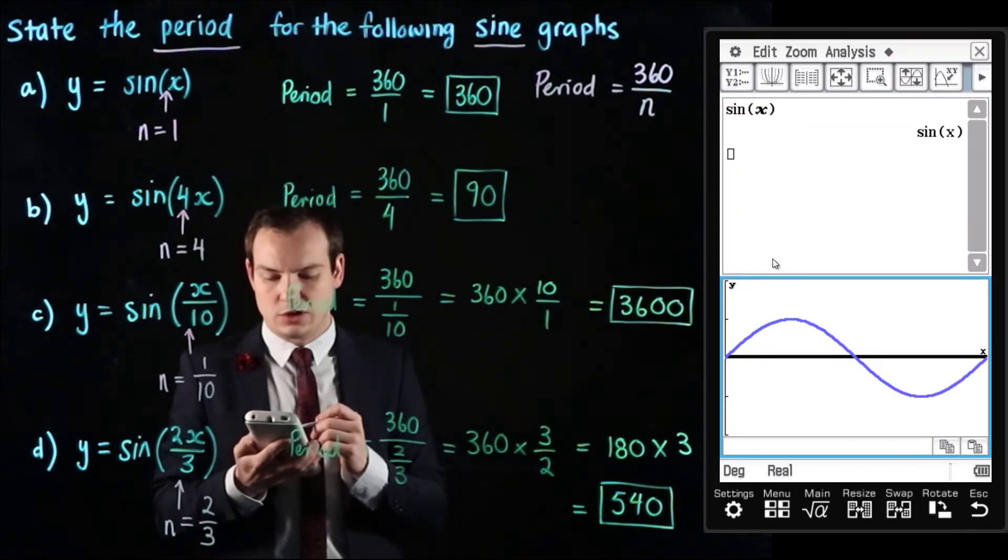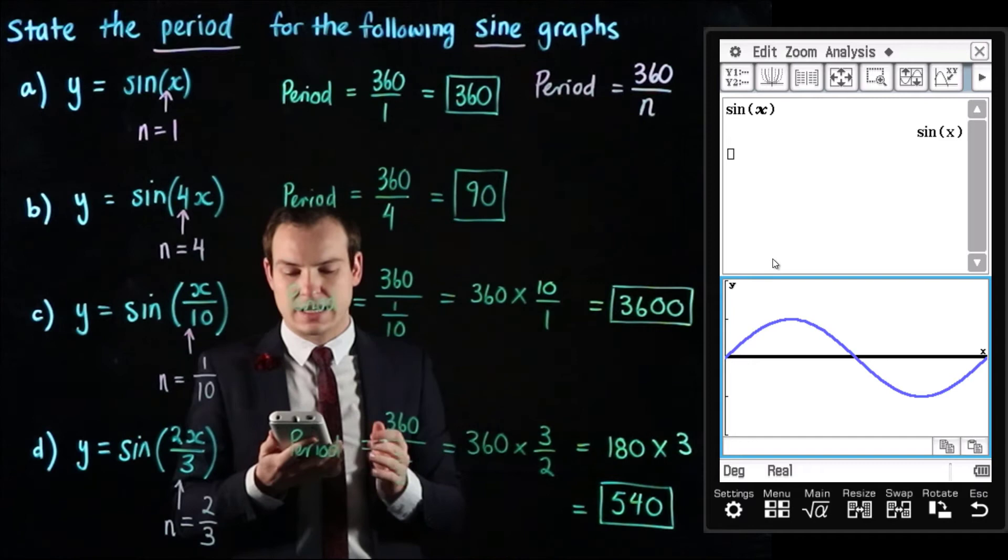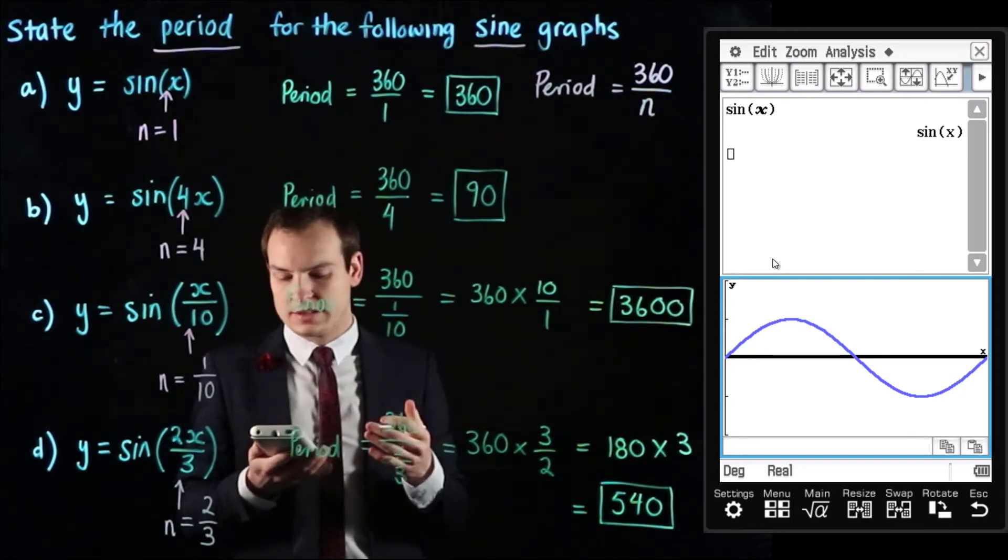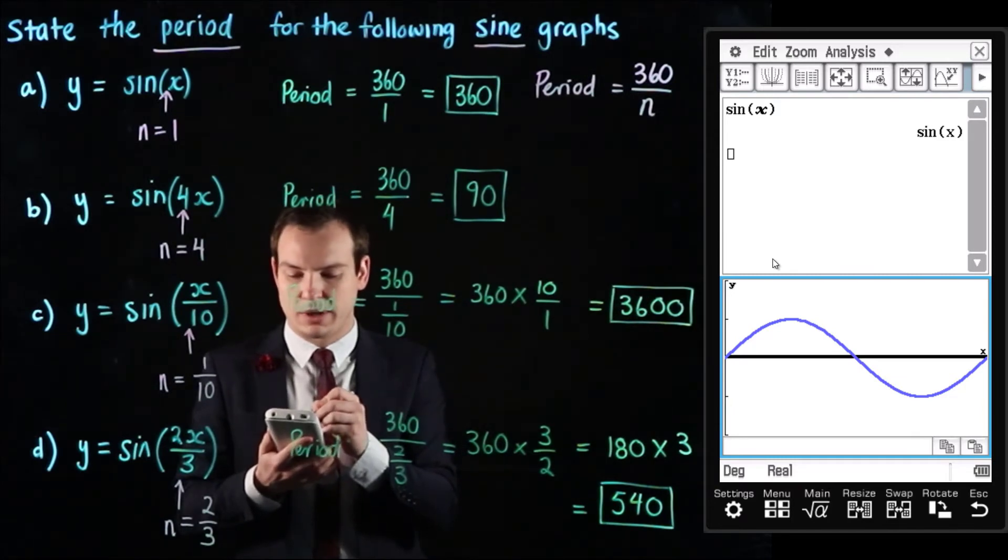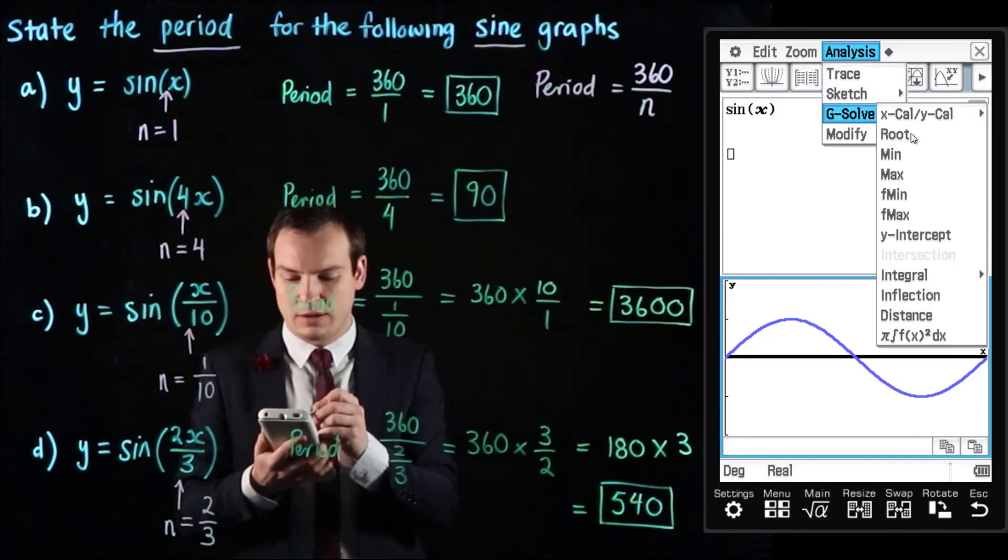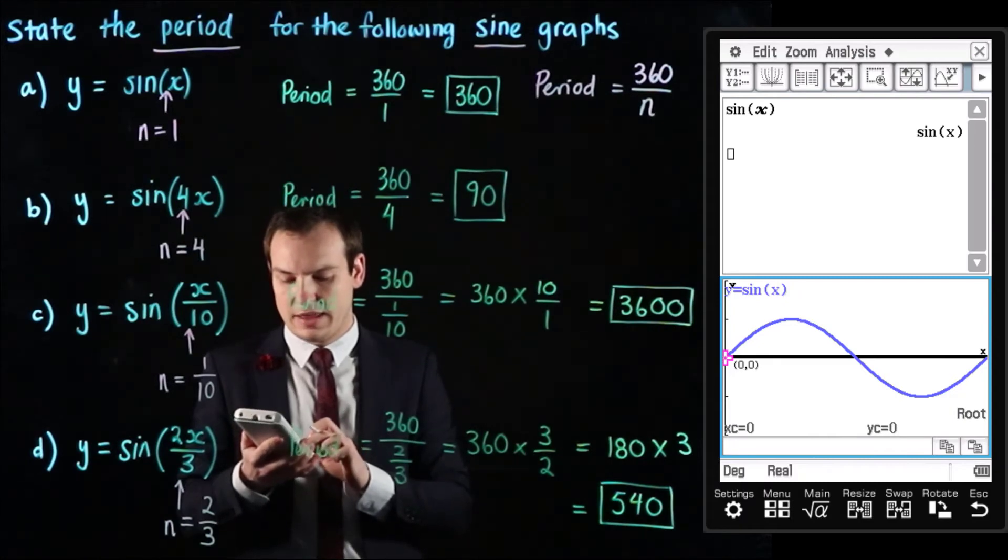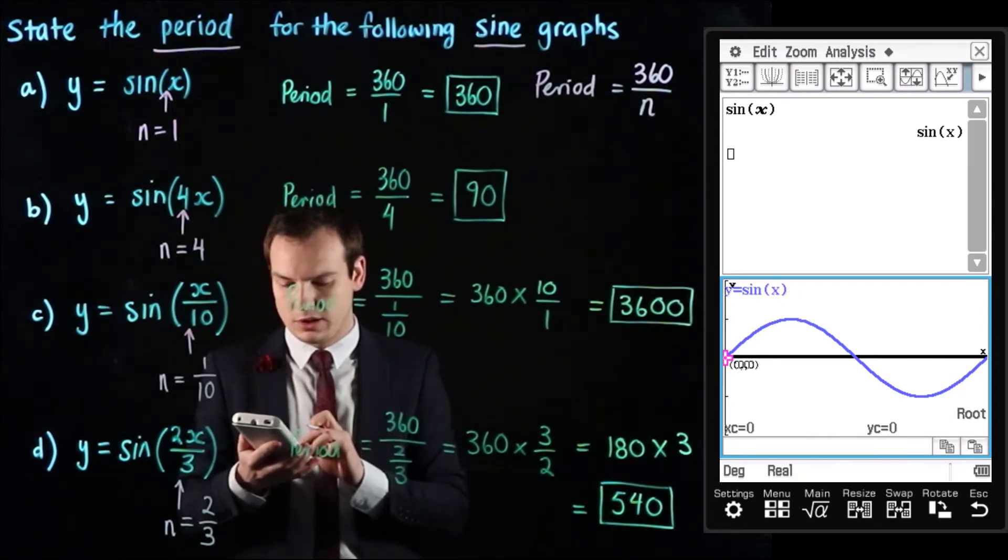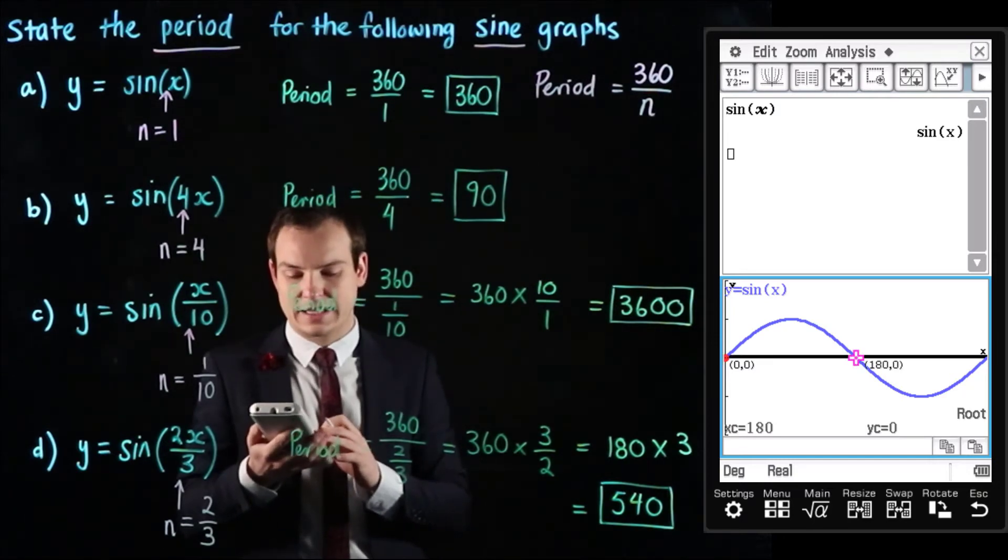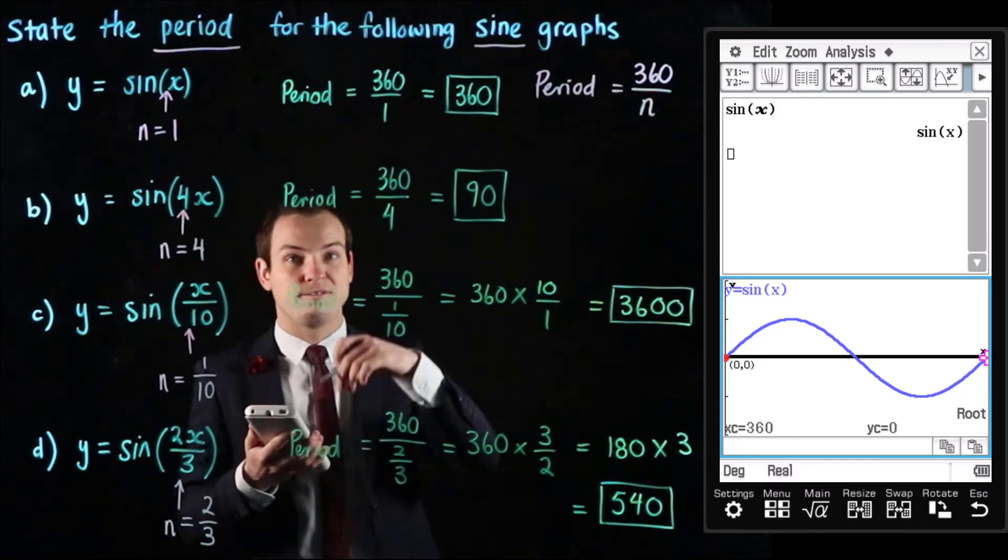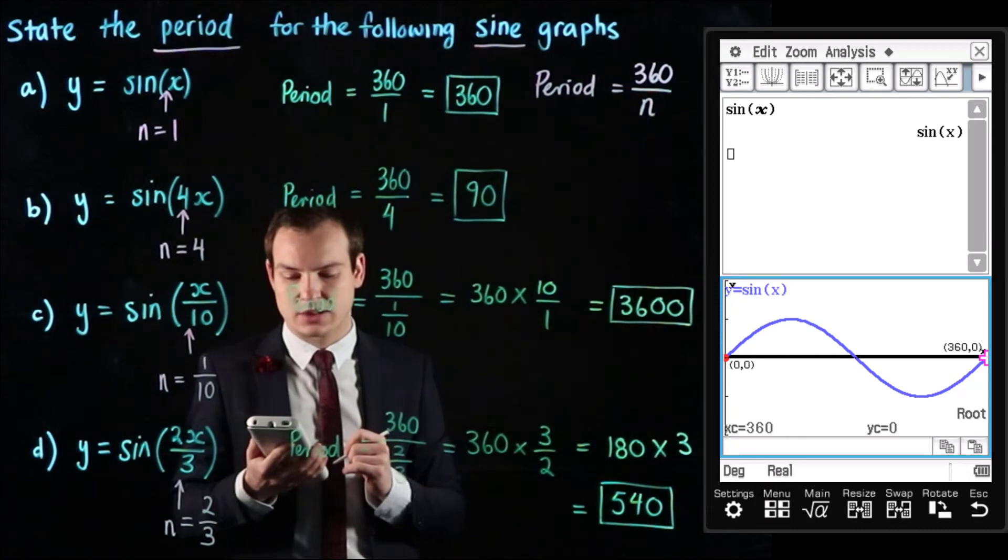Hitting ok will then show us what one cycle of this graph looks like and we can see that it takes 360 degrees to get from 0,0 to 360,0 and I can put those points on by going analysis g solve root which will give us the first x intercept at 0,0 and then I can lock that on by hitting the blue execute button and I can tab across, the next x intercept would be 180 and that second x intercept which represents a full cycle is at 360,0 and we can lock that on by hitting execute.